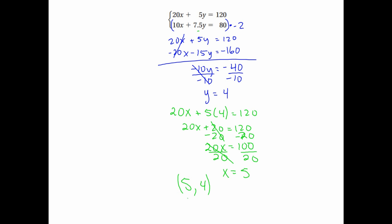Remember to write it as a coordinate: 5 comma 4. Go ahead and check your answer. 20 times 5 is 100, 5 times 4 is 20, so 100 plus 20 is 120. That works. Then 10 times 5 is 50, 7.5 times 4 is 30 — add them and you get 80. That one works too.